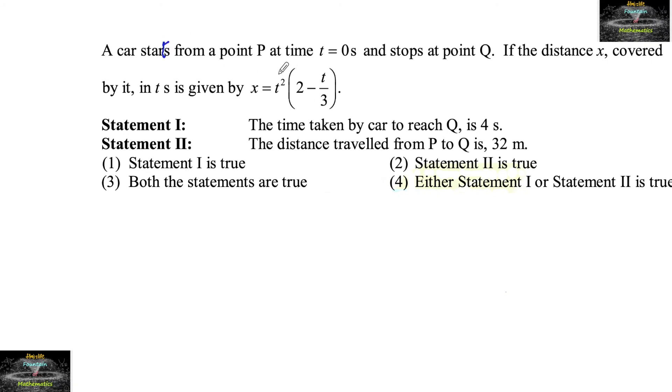A car starts from a point P at time t equals 0 seconds and stops at point Q. If the distance x covered by it in t seconds is given by x equals t squared times 2 minus t upon 3.